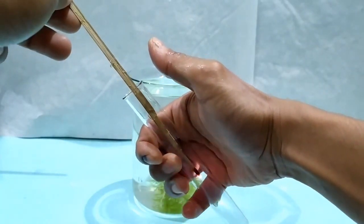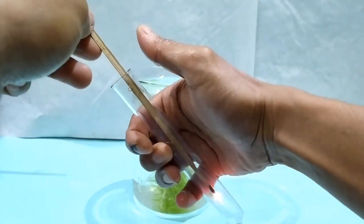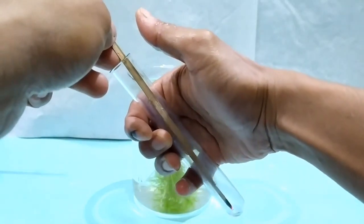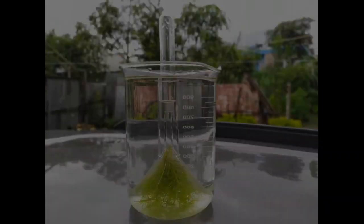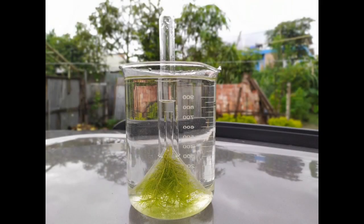This test confirms that the gas produced by the aquatic plant and collected in the test tube is indeed oxygen. This simple experiment thus demonstrates that oxygen is evolved during photosynthesis in green plants.